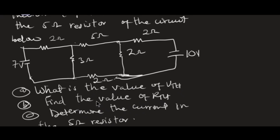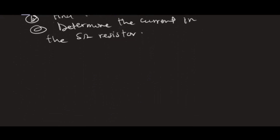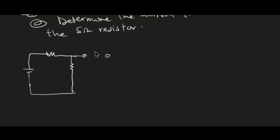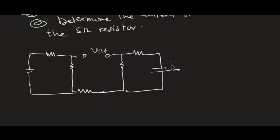To find the Thevenin open circuit voltage VTH, we redraw the circuit and remove the resistor through which we want to find the current. So I remove the 5 ohm resistor and replace it with VTH. The redrawn circuit has: 10 volts, a 2 ohm resistor, another 2 ohm resistor, a 2 ohm resistor, a 3 ohm resistor, 7 volts, and a 2 ohm resistor.